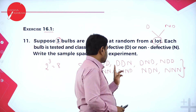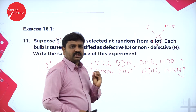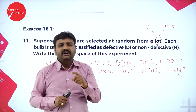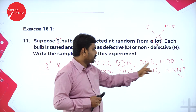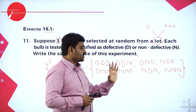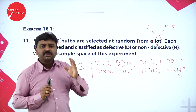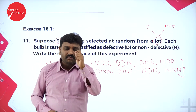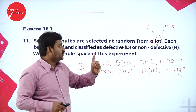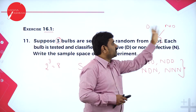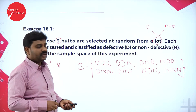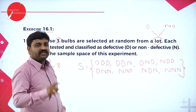Counting them: one, two, three, four, five, six, seven, eight. The possibilities are: all three defective, all three non-defective, any one defective (three possibilities), or any two defective (three possibilities). Total eight. Sample space means the set of all possible outcomes. Three bulbs, two types each, so 2³ = eight possible different outcomes.